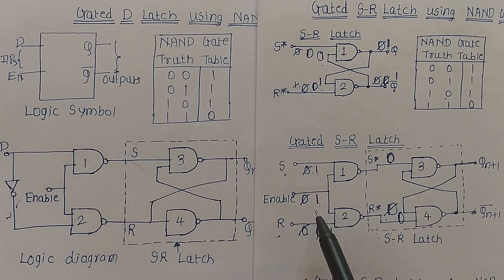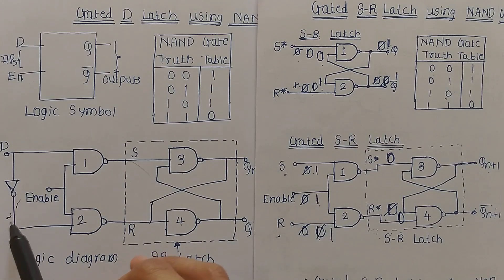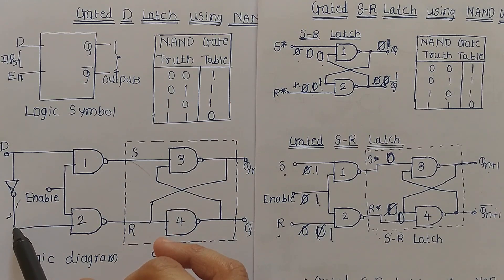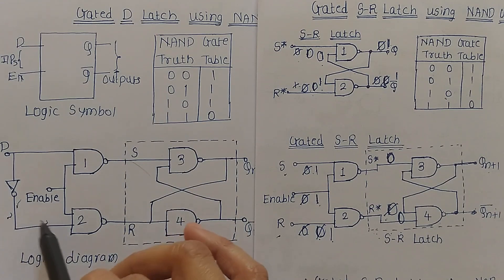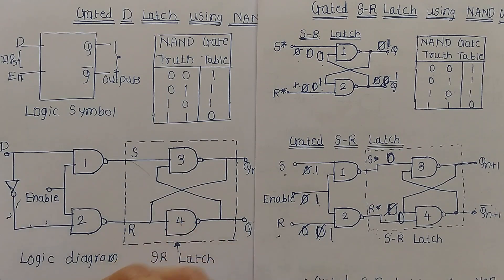The input condition S equals 0 and R equals 0 is not present in the gated D latch, and S equals 1 and R equals 1 is also not present in the gated D latch.